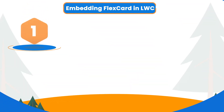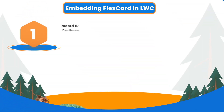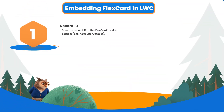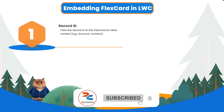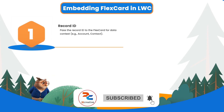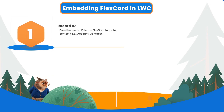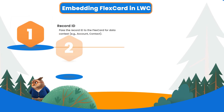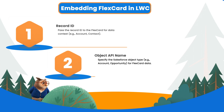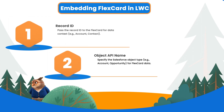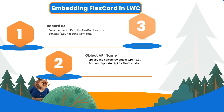Next is record ID. Pass the specific record ID you want the flex card to display — this provides the data context for record-specific information. Further, we have object API name. We can specify a Salesforce object type like account, contact, or opportunity. This will tell the flex card what type of data to expect.